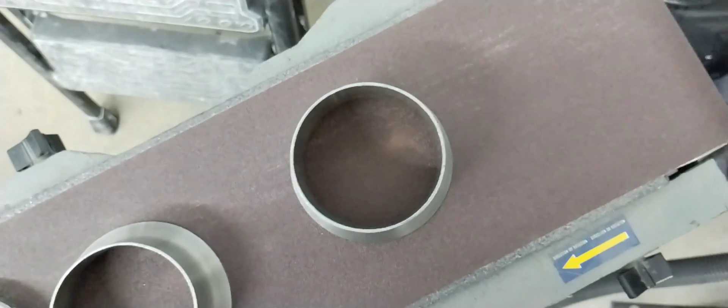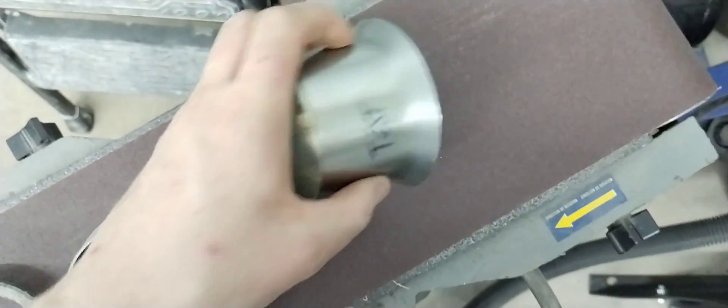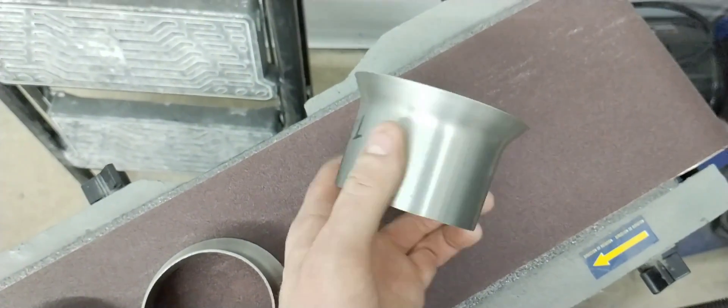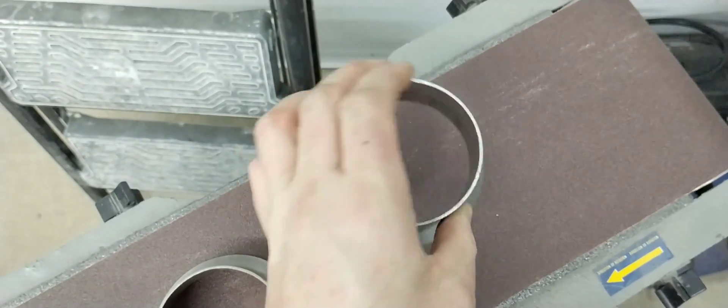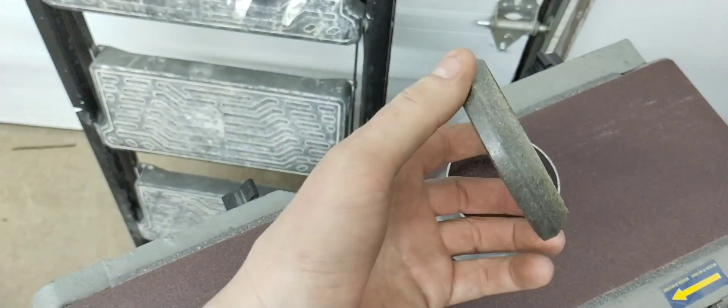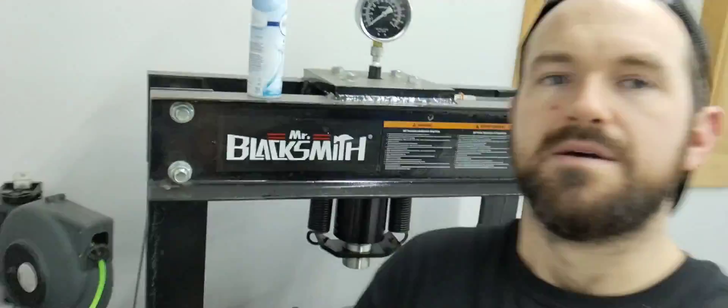Whereas this one, this one's on the money. This is pretty much perfect and it seals. It's the right shape and everything. How did we get there?